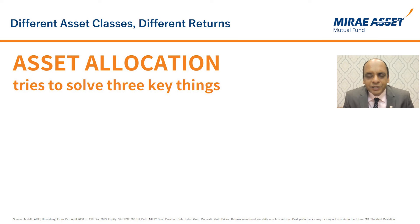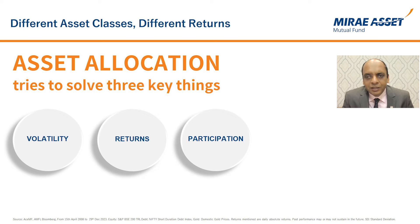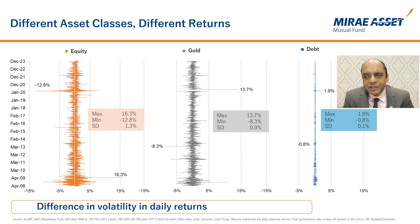With this unique nature of each asset class, let's try to find a solution to this jigsaw puzzle. Asset allocation, in our view, tries to solve three key things: one, volatility; second, returns; and third, it gives participation. Different asset classes tend to exhibit different levels of volatility. Daily returns of equity, debt, and gold since April 2008 indicate different levels of return divergence and volatility.